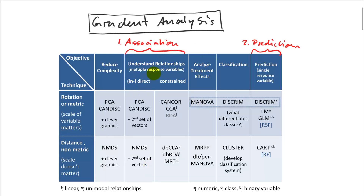Let's start by taking a look at our toolbox — where we are in terms of objectives and broad classification of techniques. The objective of gradient analysis is to understand relationships between two multivariate data sets, and this is equivalent to univariate correlation analysis. We have a number of techniques that are rotation-based and distance-based, and we cover all of those in this unit. Some of them we already know very well, like principal component analysis and metric or non-metric multidimensional scaling.